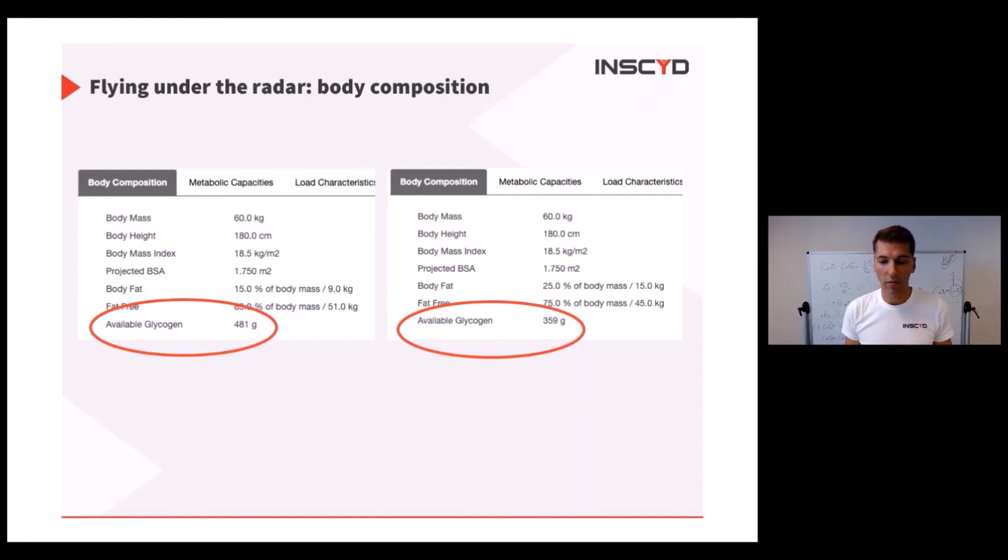And if you want to plan race pacing and fueling, 120 grams of glycogen, that's huge. That is an additional 30, 40 watts on the bike, or an hour longer running. So don't underestimate what you can do with good body composition data.